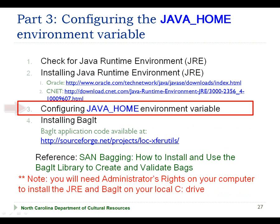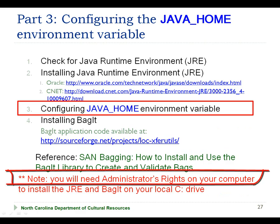This is part 3 of the Bagot installation instructions, where I'm going to demonstrate how to configure the JAVA_HOME environment variable. Note that to configure the JAVA_HOME environment variable, you will need administrator rights on your computer. This will be relevant for users who choose to install Bagot on a drive other than the C drive that they have write access to. However, you will still need administrator access to configure the JAVA_HOME environment variable. Please contact your IT support representative for assistance in completing this step if you don't have administrator access on your computer.